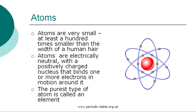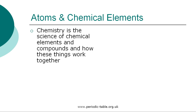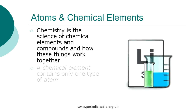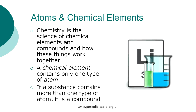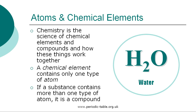The purest type of atom is called an element. What is the connection between atoms and chemical elements? Chemistry is the science of chemical elements and compounds and how these things work together. A chemical element contains only one type of atom. If a substance contains more than one type of atom, it is called a compound. There are millions of chemical compounds which are often expressed as chemical formulas. The chemical formula for the compound that we know as water is H₂O, indicating that two atoms of hydrogen have combined with one atom of oxygen.